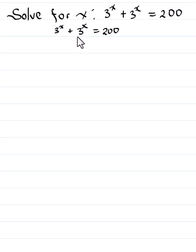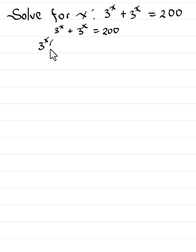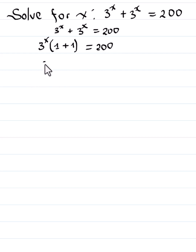Now observe that — treat these as variables, okay. 3 raised to the power x, 3 raised to the power x. So we can factor out 3 raised to the power x. So we have 3 raised to the power x times 1 plus 1, which equals 200.